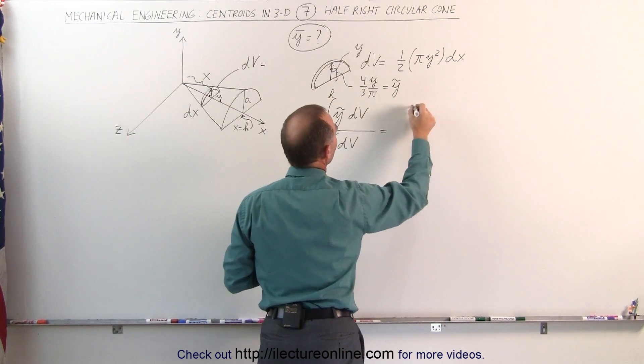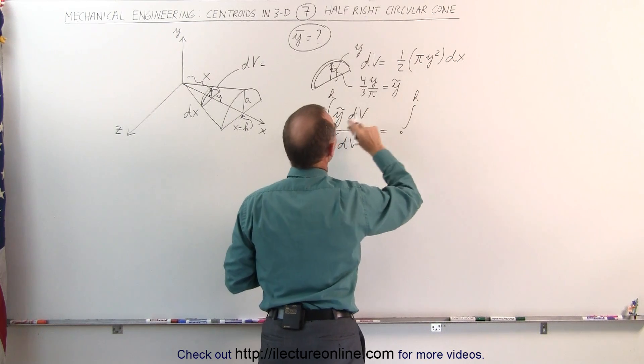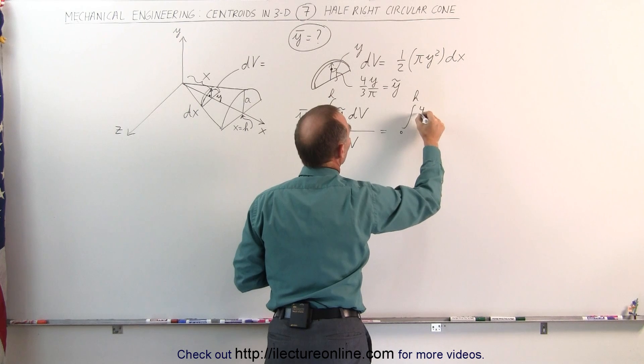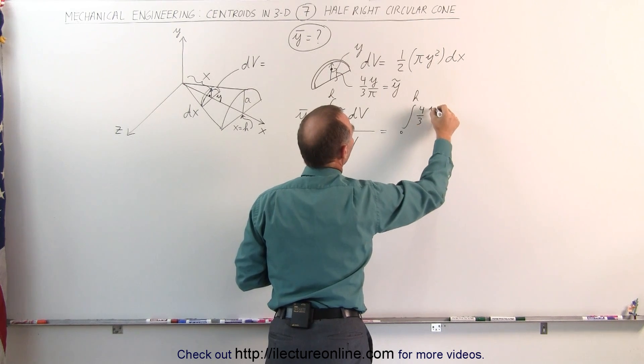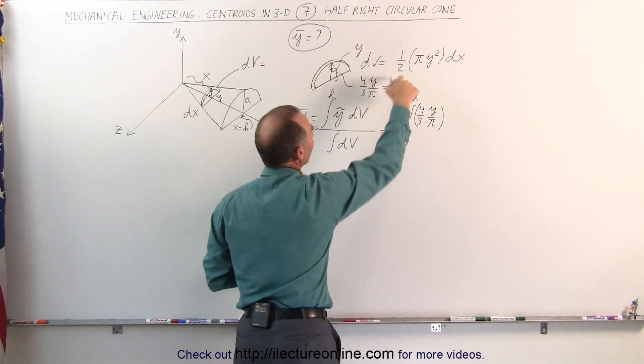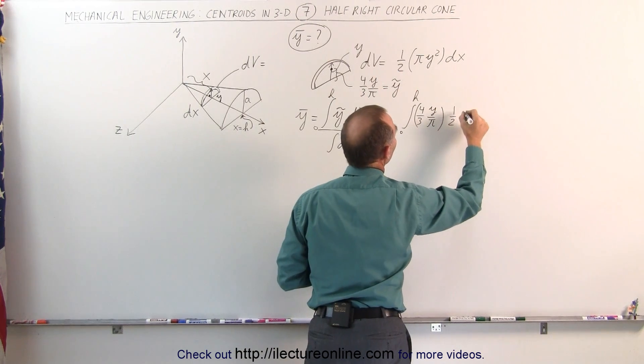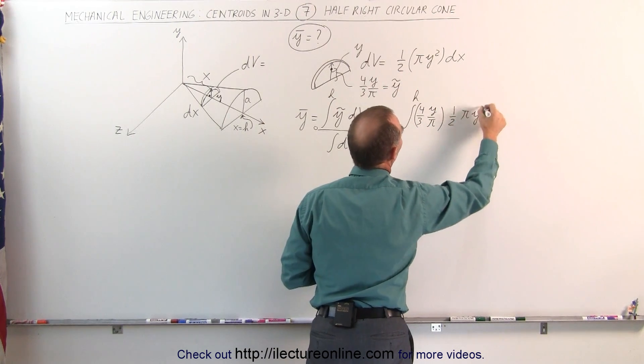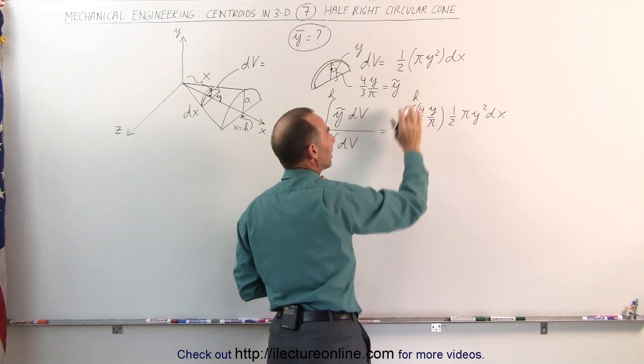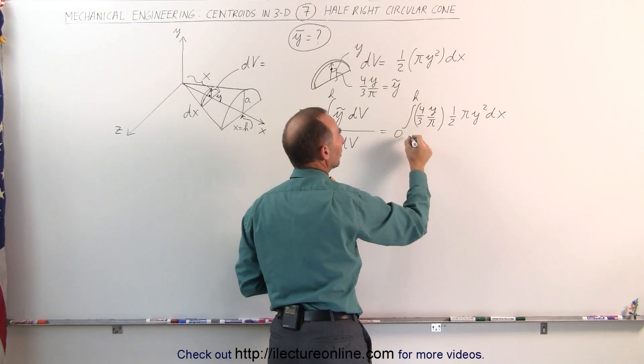This is equal to the integral from 0 to h of the y coordinate of the center of the small little piece which is 4 thirds y over pi times dv. Now dv is still 1 half times pi y squared times dx. That's why you can see that the integral limits are going from 0 to h.